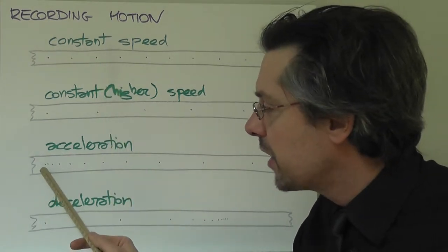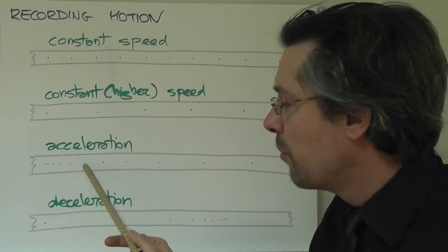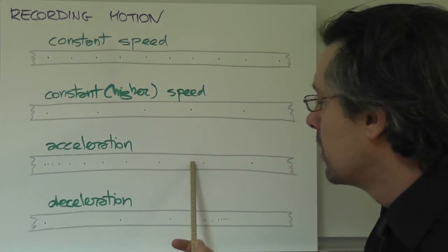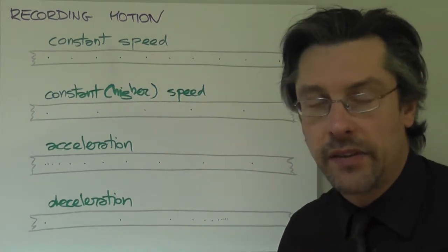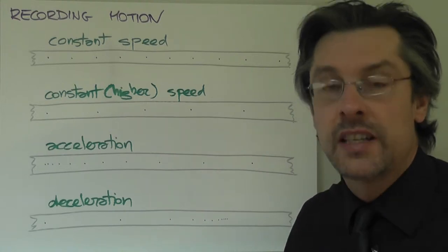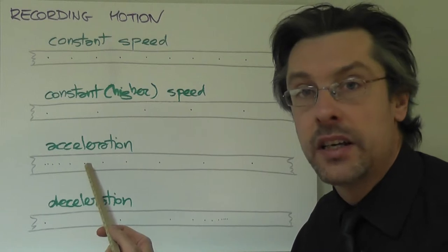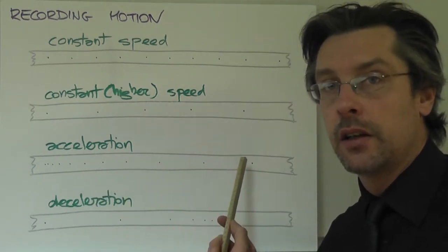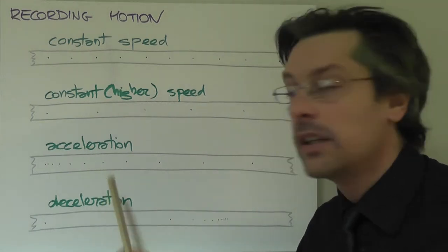How about this one? Here we have dots which are becoming more and more far apart. And now it should be easy to understand that that means that the object is changing its speed. Actually in this case the speed is increasing. And how do we call an increasing speed? We call it acceleration.